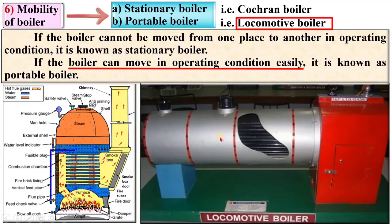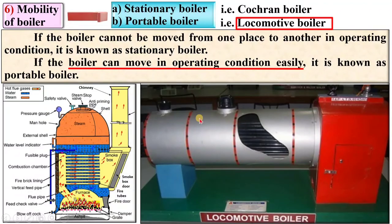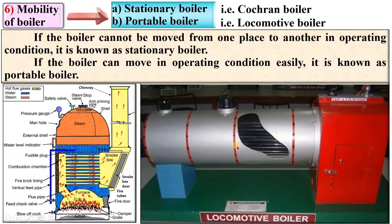The example of a portable boiler is the locomotive boiler. This type of boiler is generally used in trains, and that's why you can understand that this boiler can move in operating condition.